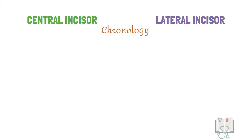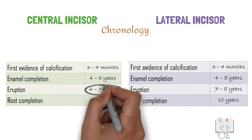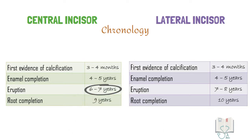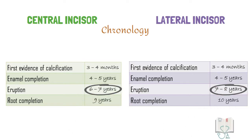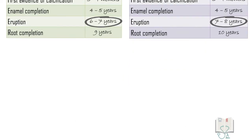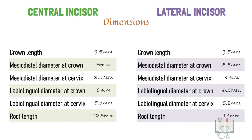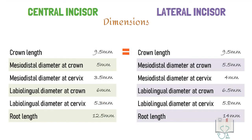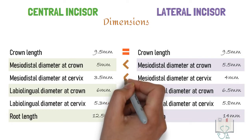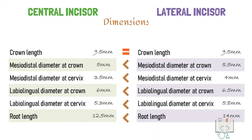Chronologically, the central incisor erupts at the age of 6 to 7 years and lateral incisor at the age of 7 to 8 years. Coming to measurements, except the crown length which is the same in both incisors, the lateral incisor is bigger than the central incisor in all dimensions.